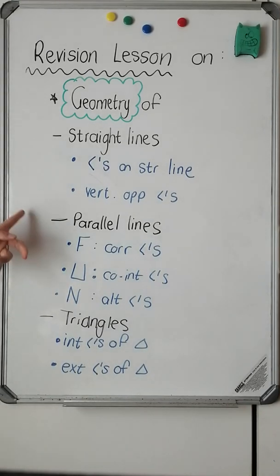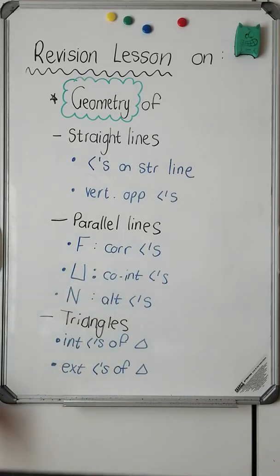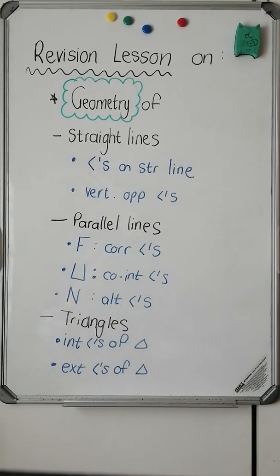We're also going to cover geometry of parallel lines, and that's when we look for our fun angles. If we see the F shape, we know it's corresponding angles. If we see the U shape, it's co-interior angles. And if we see the N shape, then we know it's alternating angles. And lastly, we're going to cover geometry of triangles — the interior angles of a triangle and the exterior angles of a triangle.